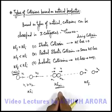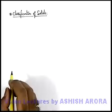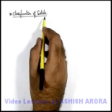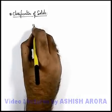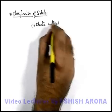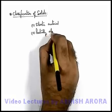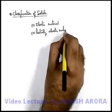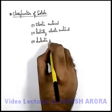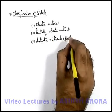Let's discuss the different types of materials, based on which we define the three types of collisions. Classification of solids: all types of solids are divided into three different kinds of materials — elastic material, partially elastic material, and inelastic material. Inelastic materials are also termed as plastic materials.